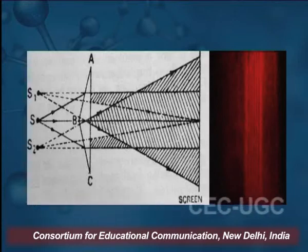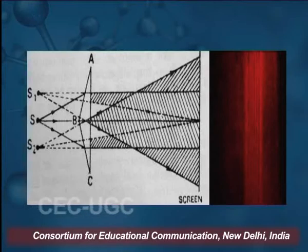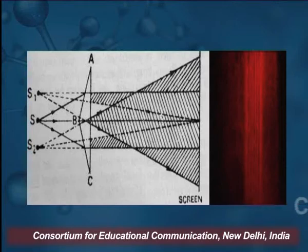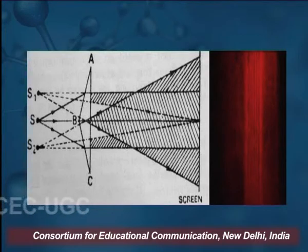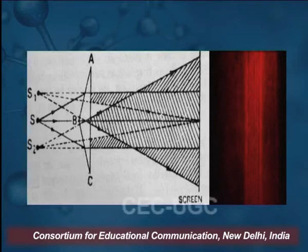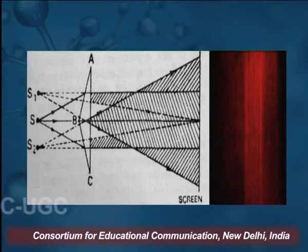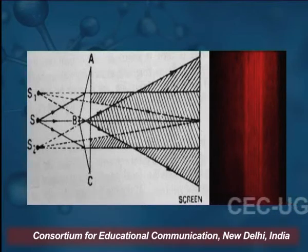In this manner we get S1 and S2 — two virtual sources from the single source S. These two sources produce the interference pattern. The middle part of the screen shows the overlapping of the light, producing the interference pattern. On the right-hand side we see the output of monochromatic light. As it appears red, we are using a helium-neon laser monochromatic source to get the interference pattern. This is the arrangement of the Fresnel Biprism.